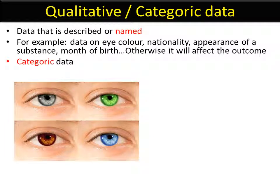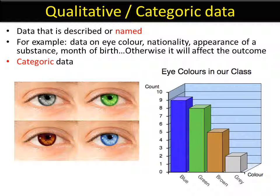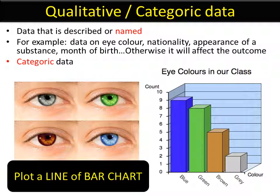Eye color would be an example. You represent qualitative or categoric data in a bar chart. Don't plot a line graph, that's a bit of a mistake. Plot a bar chart.